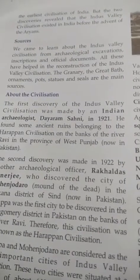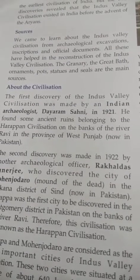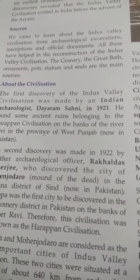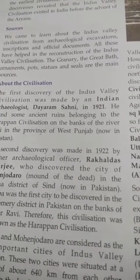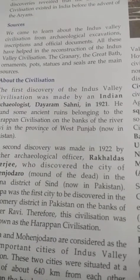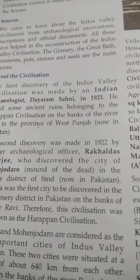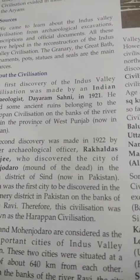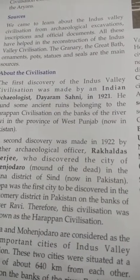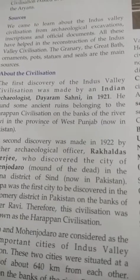Now, the sources of information. Sources of information are divided into two parts: archaeological sources and literary sources. Here there are no literary sources because the Indus Valley script has not been deciphered till now. So we have only archaeological sources. From archaeological excavations, we got various types of remains — pots, statues, seals — as well as the great granary, the great bath, Harappan cities, and Mohenjo-daro. All these things give us a lot of information about the Indus Valley civilization, which our historians have studied and shared with us.